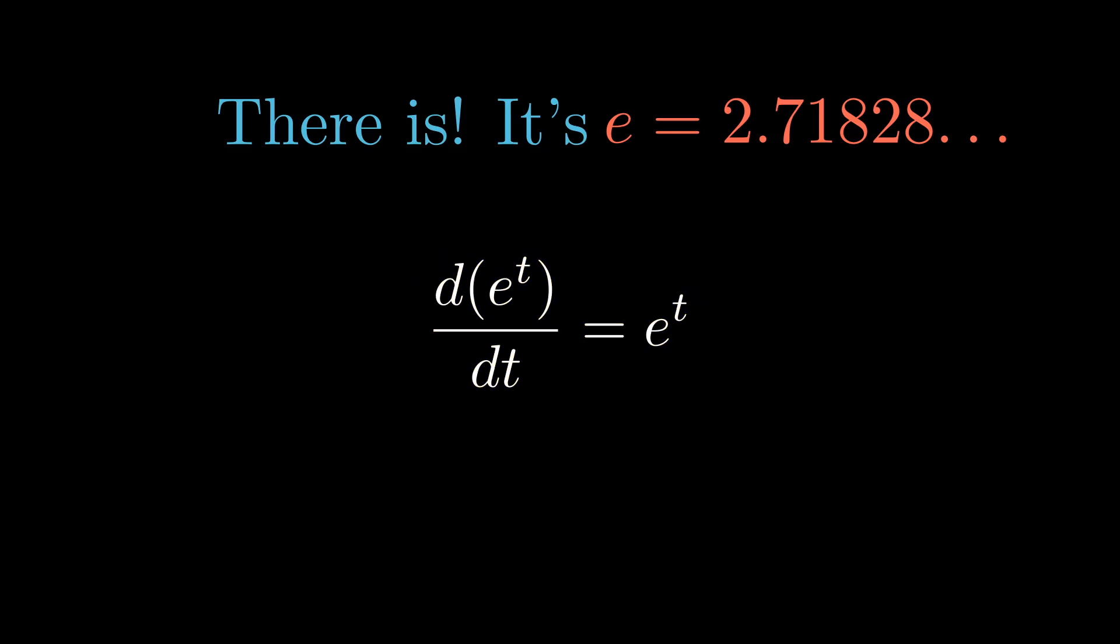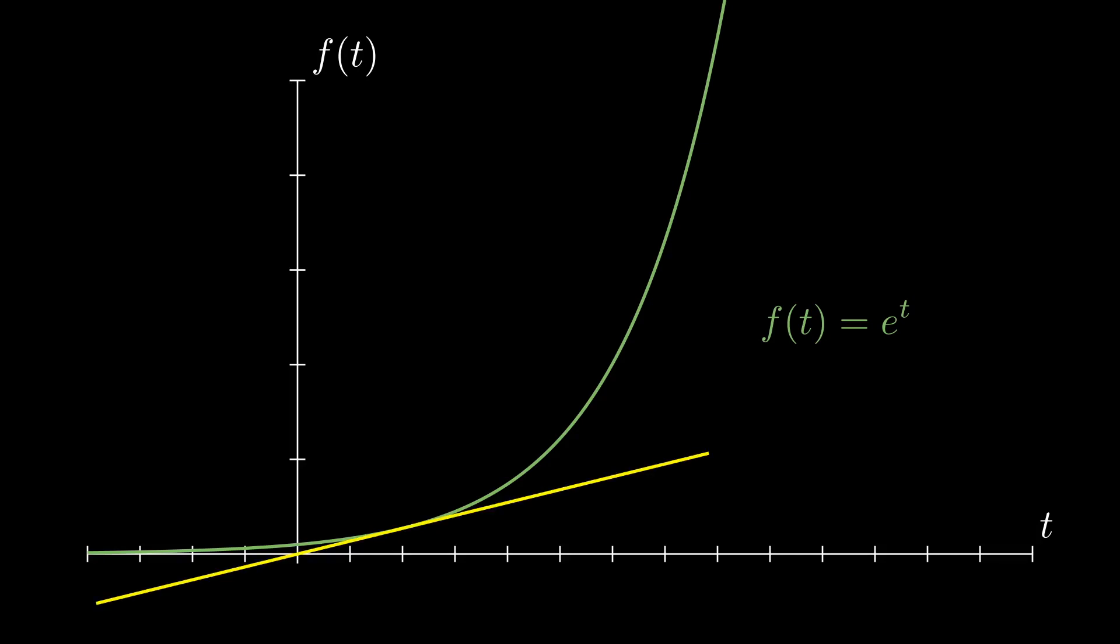One way to think about this is when we take a look at the graph of E to the t and we place a tangent line on the graph we can see that the slope of the tangent line is always the same as the height of the given t value input.